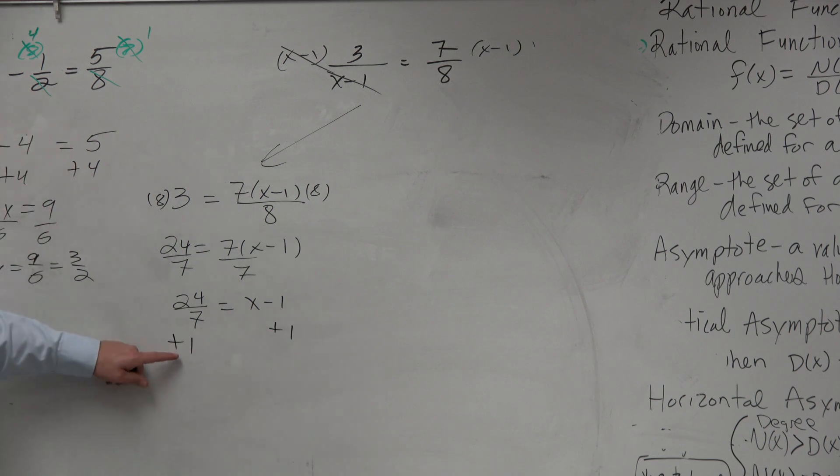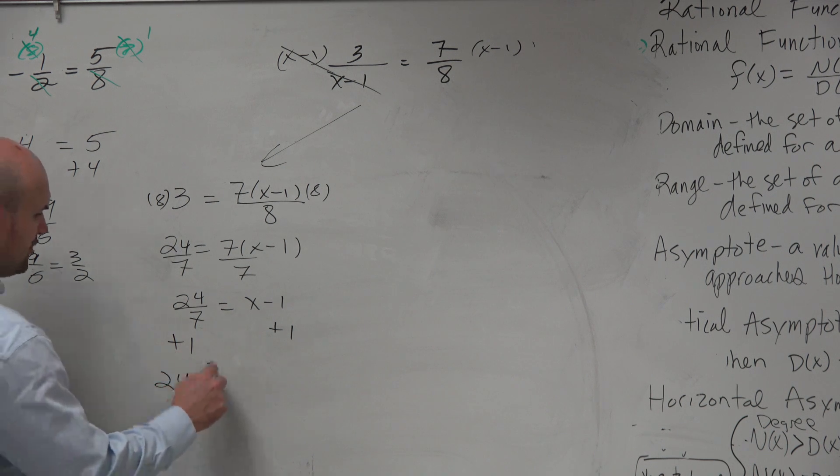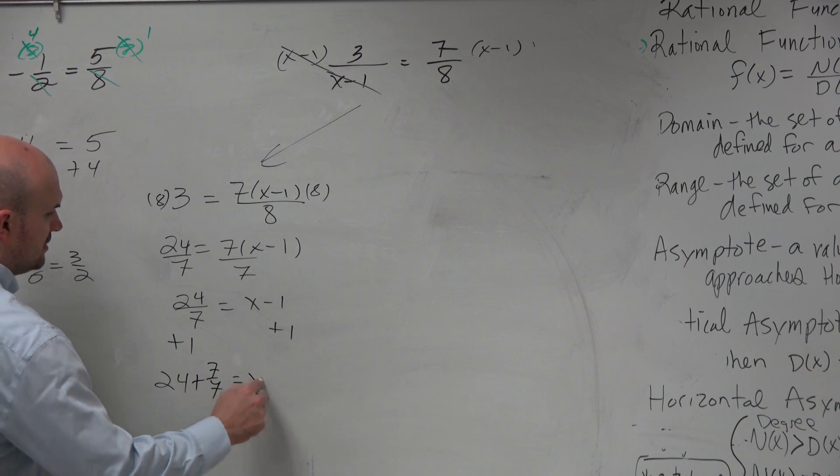And then you could add 1 to both sides. Is it OK then, guys, if I rewrite 1 as 7 over 7? Is that OK? Yes. To make life a little bit easier? 24 plus 7 over 7 equals x. So x equals 31 over 7.